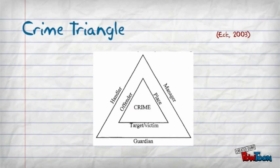The inner triangle represents necessary elements for crime, while the outer triangle represents the potential controllers. The presence of one effective controller or the removal of any one of the inner elements can prevent the criminal event.